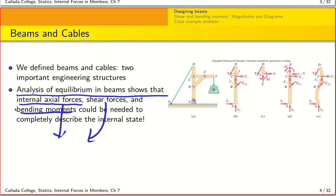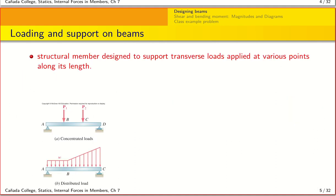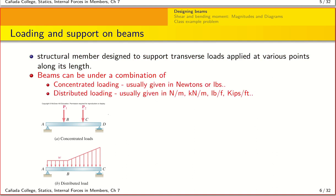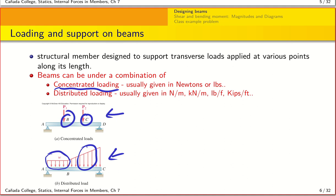The internal state is important because when you apply a load, you want to make sure the beam you select can actually withstand that load and doesn't break. In terms of loading, beams can be classified into two categories: concentrated loading, where a load is applied at specific points, and distributed loading, where you have a load per unit length that may vary along the beam. Of course, you can also have a combination of both concentrated and distributed loads on the same beam.